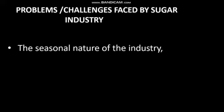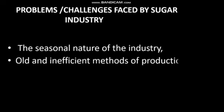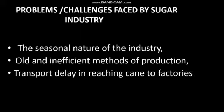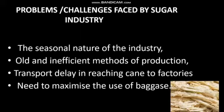The challenges faced by the sugar industry include: first, the seasonal nature of the industry — sugar cane takes almost one year to mature or harvest, so the industry operates seasonally only. Second, old and inefficient methods of production. Third, transport delays in reaching cane to factories, which reduce the sucrose content of the sugar cane. There is also a need to maximize the use of bagasse.